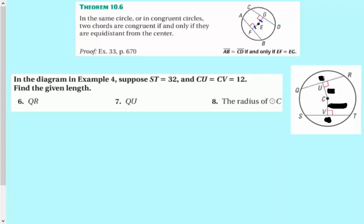An example for us. Suppose that ST is 32, so that's 32. And CU and CV are both 12, so 12 and 12. So these are the same. So that means that the two chords are going to be congruent because they're equidistant from the center. So QR, then, is going to be 32 because these two chords are congruent. QU is going to be half of that, 16.